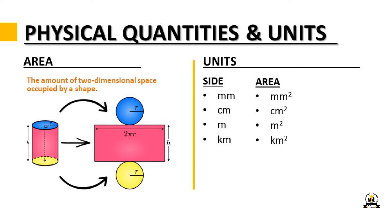Another physical quantity is area, which means the amount of two-dimensional space occupied by a shape. If a side is measured in millimeters, the area will be in square millimeters. If the side is in centimeters, the area is in centimeters squared; meters gives meters squared; kilometers gives kilometers squared. Remember to put that '2' at the top — it shows you've been calculating area.